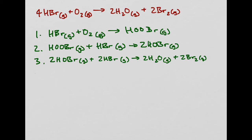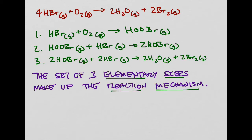An important thing to note is that the products of the previous reaction become the reactants in the next one. HOOBR is produced in step one and becomes a reactant in step two, and HOBR is produced in step two and becomes a reactant in step three. Each of these individual steps is called an elementary step, and when you write out the full set of elementary steps, we call that a reaction mechanism.